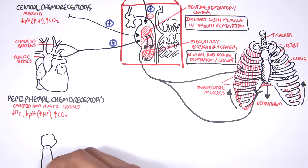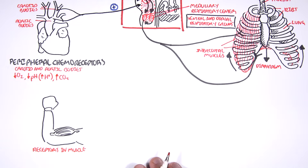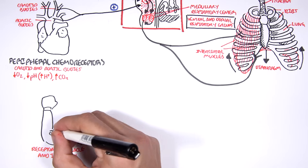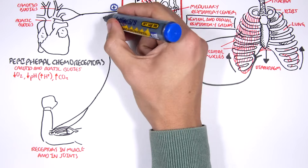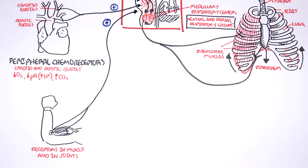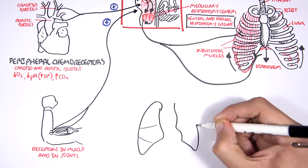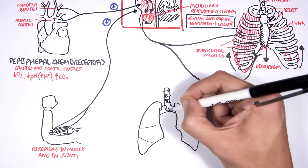You also have receptors in your muscles and joints, which are stimulated when you exercise. When you exercise, these receptors will stimulate the respiratory center so you breathe quicker — taking in more oxygen and blowing out all the acid that has built up.